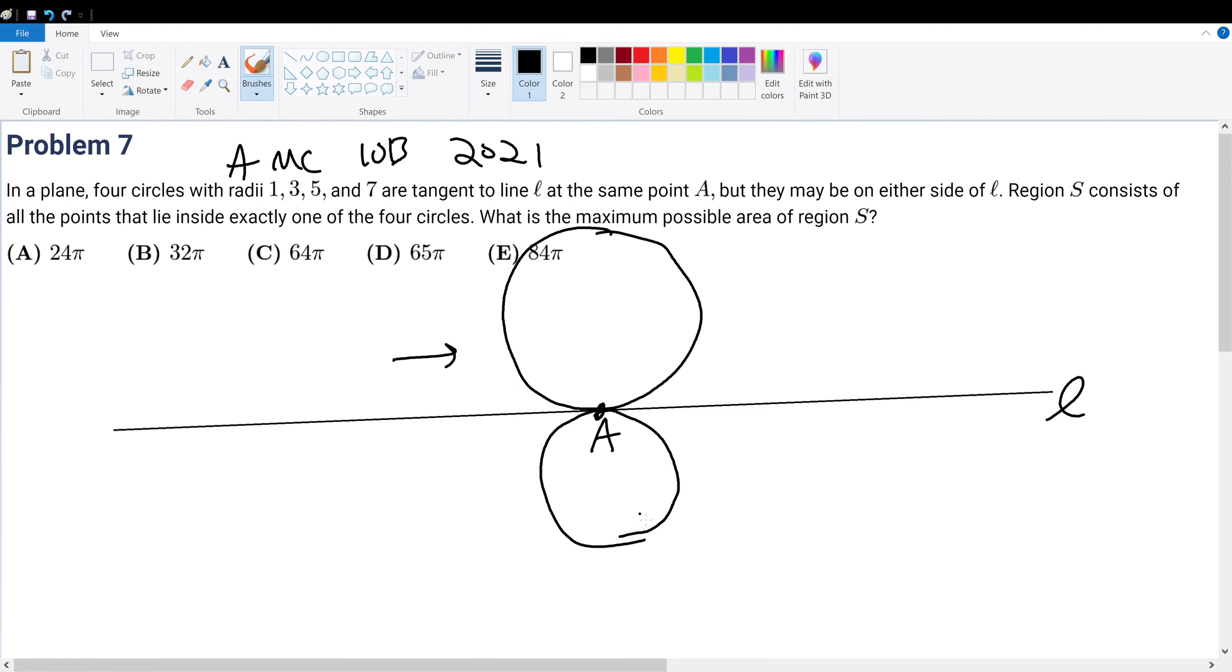Obviously, all the circles have to be plotted. So that means, optimally, this has to be circle five, this is circle three, and inside is circle one. And then we obviously want to have the largest area.